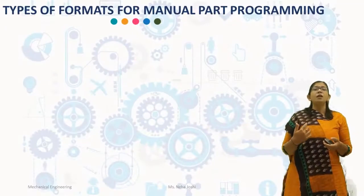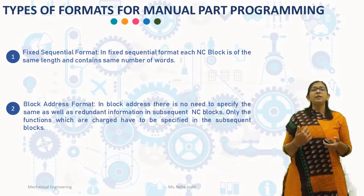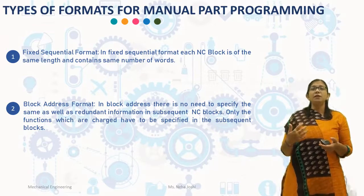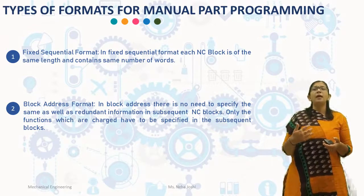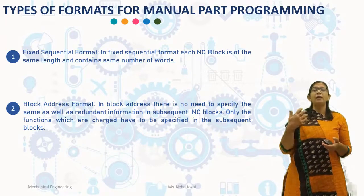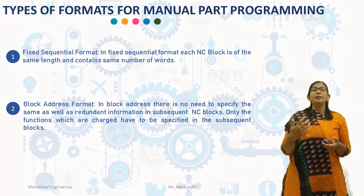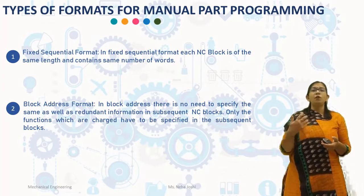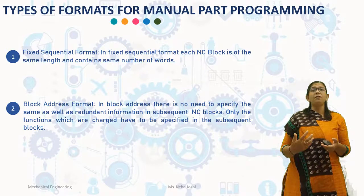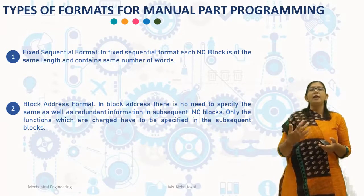The first format is fixed sequential format. In the fixed sequential format, each NC block is of the same length and contains the same number of words. For example, even if the feed and speed are the same for 10 blocks of the NC program, the same feed functions and spindle functions must be coded in each block.